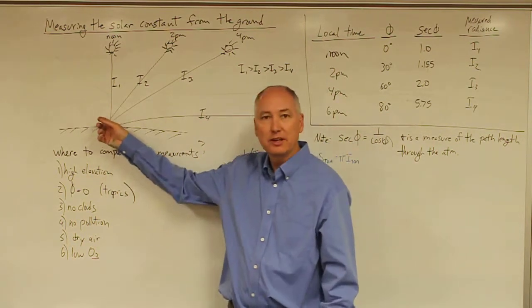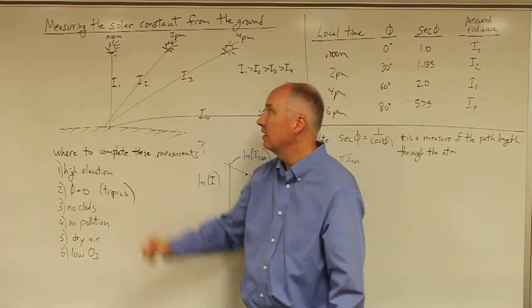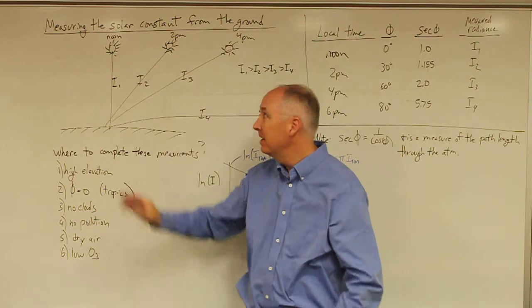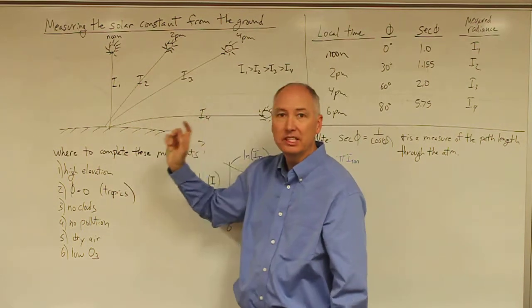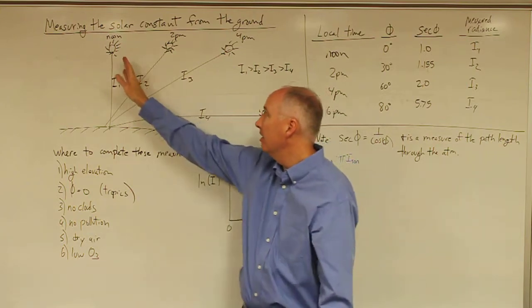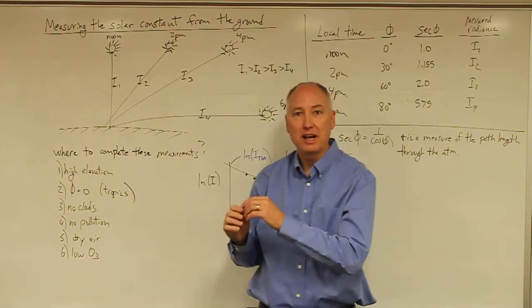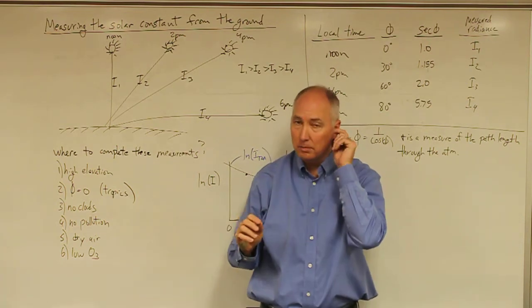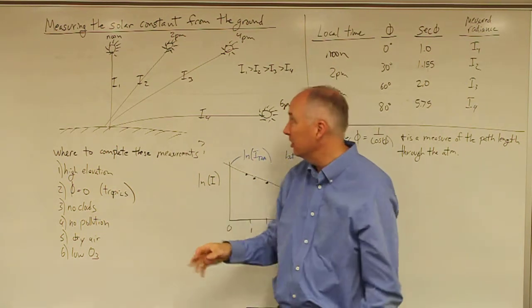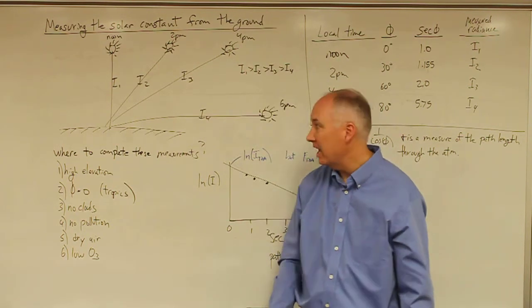We set up an observation station and we measured the radiance looking at the Sun at different times of the day. Starting at local noon when the Sun is directly overhead and then as the Sun gets further and further down in the sky, it's now passing through a longer and longer path length of the atmosphere and the radiance is actually going to decrease throughout the day.